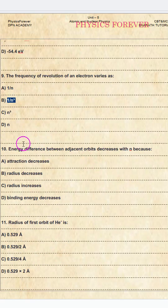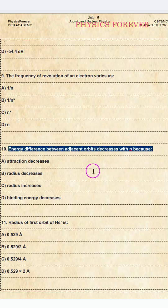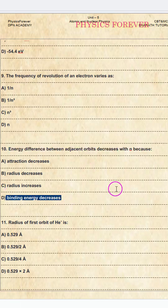Question number ten: energy difference between adjacent orbits decreases with n because? The correct option is D, binding energy decreases.